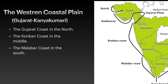The Western Coastal Plain begins from Gujarat in the north and passes through Maharashtra, Goa, Karnataka, and Kerala. It is divided into three main parts: the Gujarat coast in the north, the Konkan coast in the middle up to Goa, and the Malabar coast in the south from Goa to Kanyakumari.